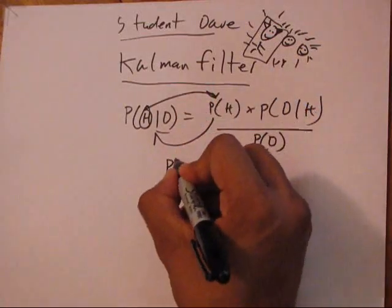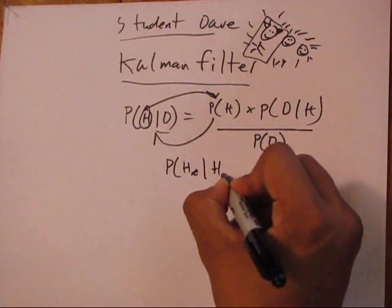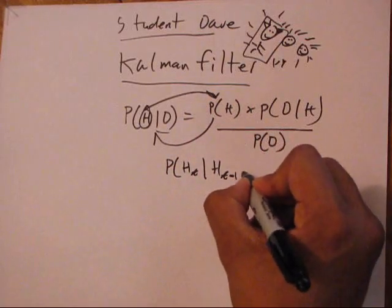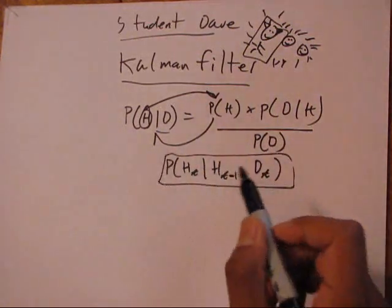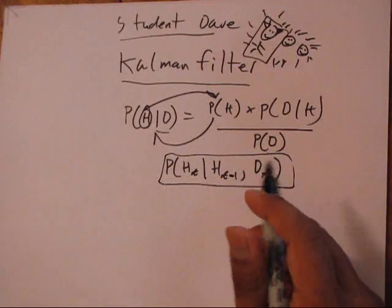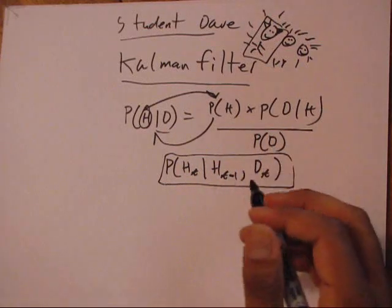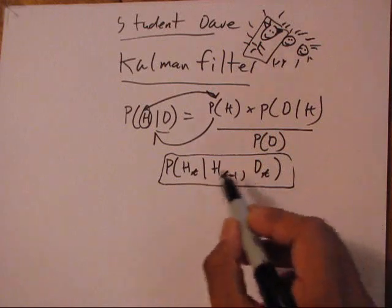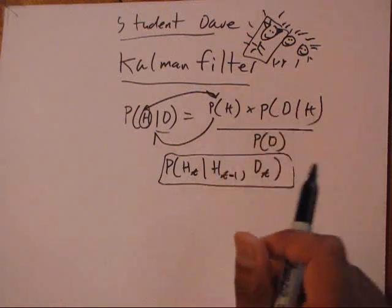So more generally, what is this? This is saying the probability of a hypothesis at time t given the hypothesis at t minus 1 and the data at t. But this is kind of constraining our state estimate because basically we're holding the state constant. The state isn't moving and we're just estimating it as we get more data from it. But what if we want to model something more complex?